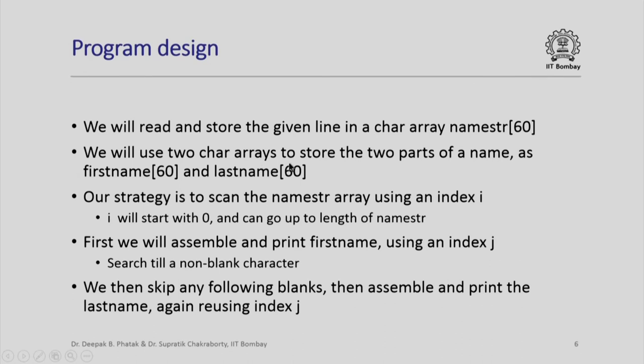We have to separate out these two parts. So we define two char arrays, one called firstname, the other called lastname. We have written the sizes as 60, which is of course excessive, but it guarantees that even if a given line contains a single name and that name is very long, it can still be accommodated in either this or this.